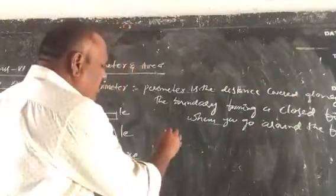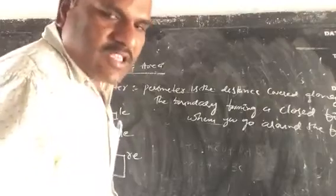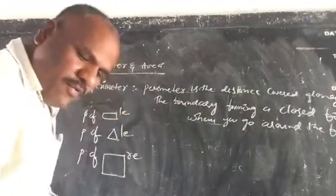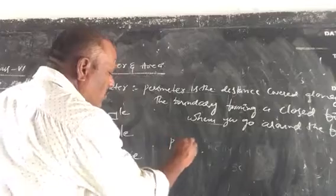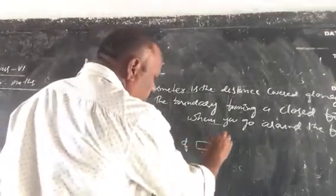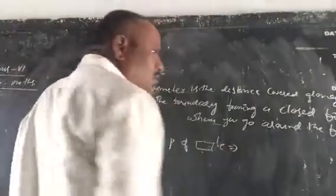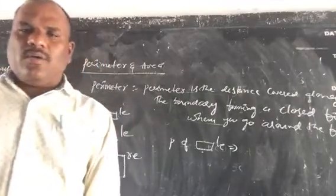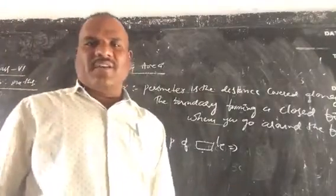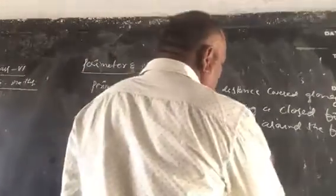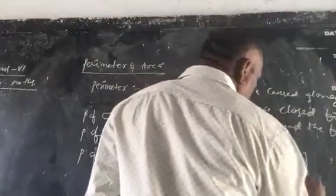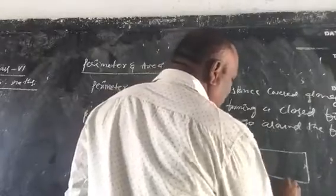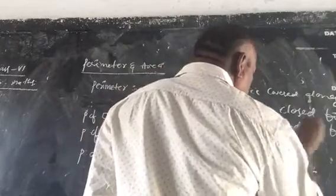So let us find out the perimeter of a rectangle. To find the perimeter of a rectangle, draw the figure. In a rectangle you have: this is the breadth, this is the length, this is the breadth, this is the length.